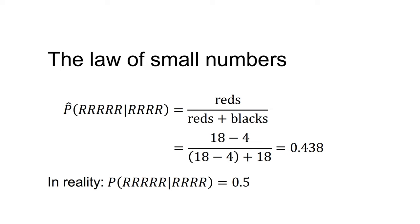In reality, the probability of 5 reds in a row, given 4 reds in a row, equals 0.5. Freddie is suffering from the gambler's fallacy.